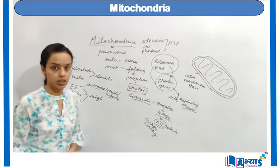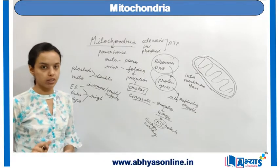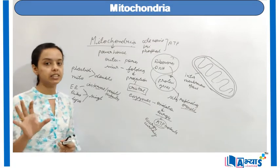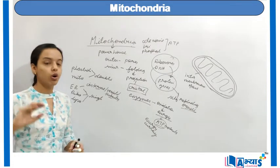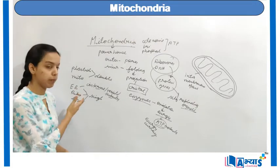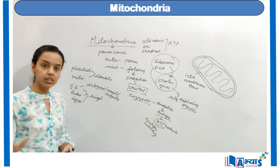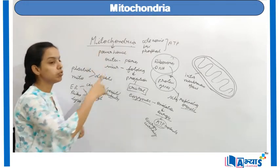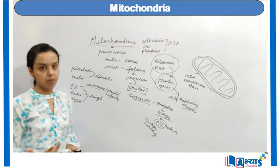Because mitochondria can multiply itself, it is called a self-replicating organelle, or a semi-autonomous organelle. Out of all organelles — endoplasmic reticulum, ribosomes, Golgi bodies — only mitochondria is self-replicating and known as semi-autonomous.